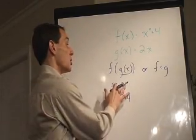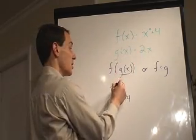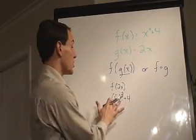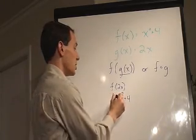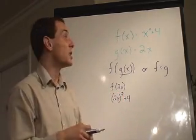So again, g of x is 2x. So that means in there instead of a 5, I'm going to have 2x. And there we go. That's really all it is.